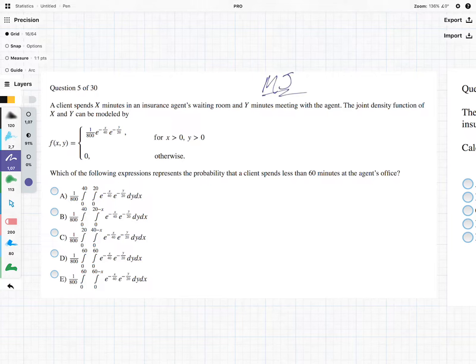Hi everyone, it's MJ and in this video we're looking at a sample question from exam P. And it says, a client spends X minutes in an insurance agent's waiting room, so waiting room is X, and Y minutes in the meeting with the agent, so the meeting is Y.